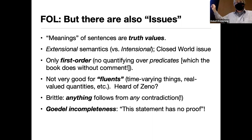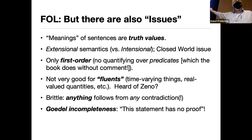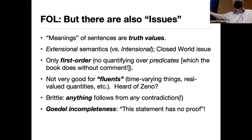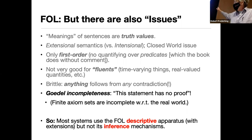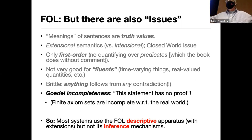Gödel caused a lot of trouble by producing a sentence in logic that says 'this statement has no proof.' If that statement has a proof, then you've proved a false thing. If it's not true, then there's a true thing with no proof. The details took two whole theory classes to explain. The inference mechanisms of logic are not great for our purposes — so what people do is use the descriptive apparatus of logic but don't use the inference mechanism. We don't turn the crank the way the mathematicians intended.